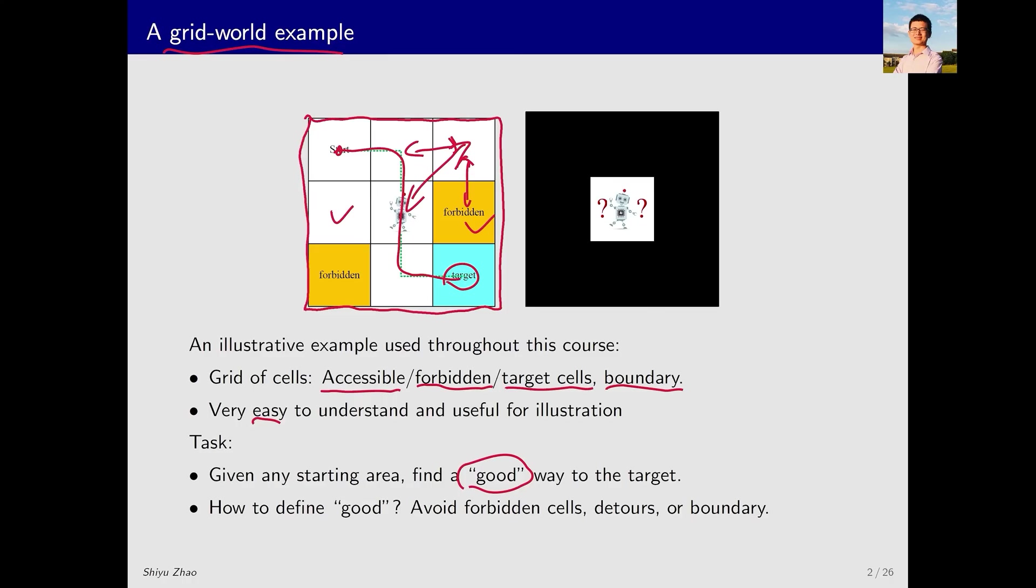This task in the grid world example raises some questions such as how do we define whether a path is good or bad? This question will be answered when we study optimal policies later. For now, a good path intuitively means that the robot should avoid forbidden areas as much as possible.